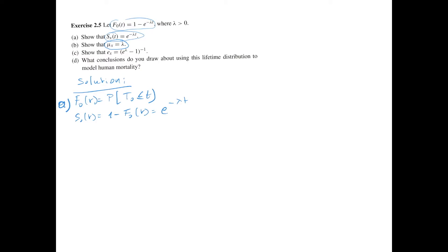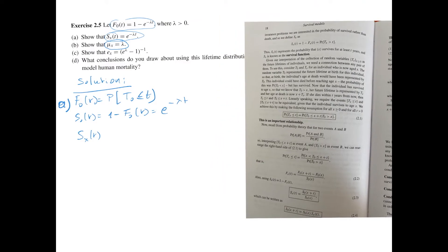Note that we now have an expression for s0, the survival function of a 0-years-old. In question a, we need to derive sxt, the survival function of an x-years-old, so we need to connect the survival function of a 0-years-old with the survival function of an x-years-old. We will use expression 2.1 from the book.